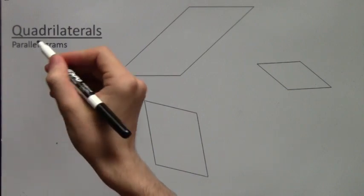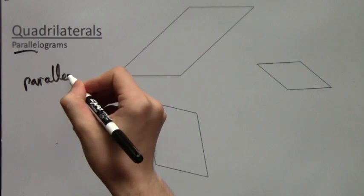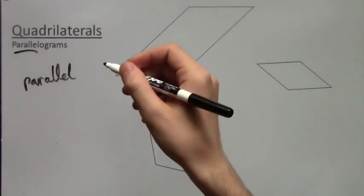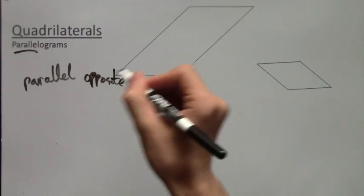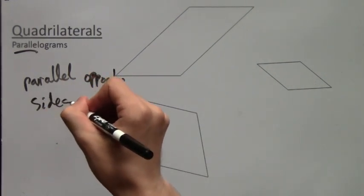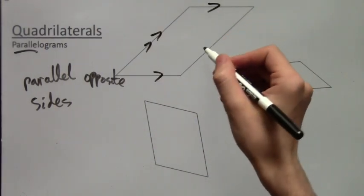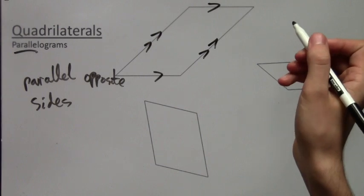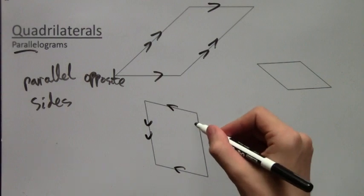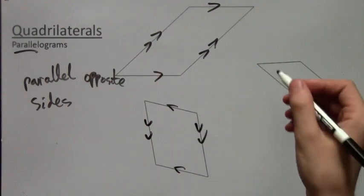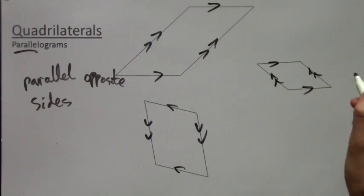Parallelograms. So the word parallel you should know from parallel lines. A parallelogram is a quadrilateral that has each pair of opposite sides parallel to each other. So for example, this side is opposite to this side and they must be parallel. Same with the other two sides. All of these quadrilaterals drawn here are parallelograms because whichever pair of opposite sides you take, they will be parallel.